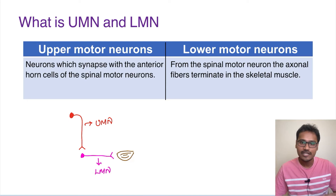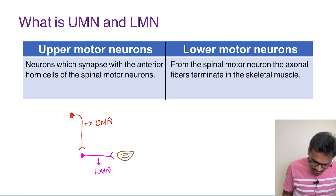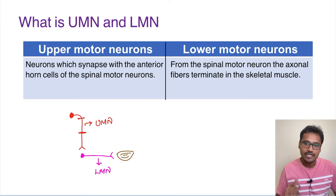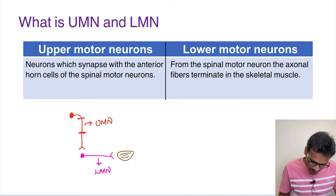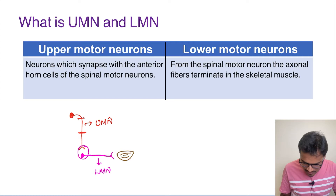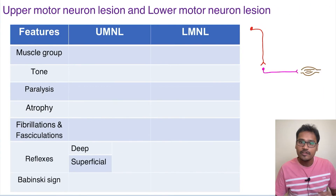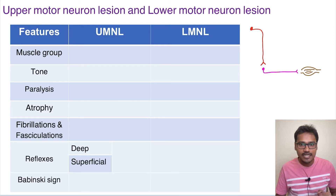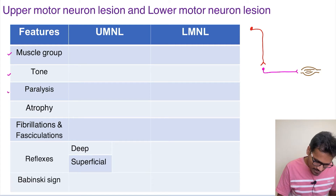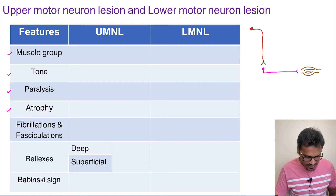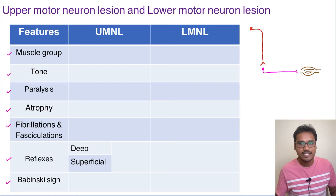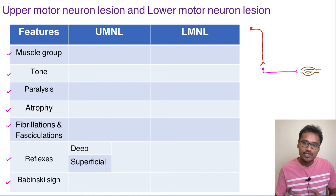Now let us try to understand what will happen whenever there is a lesion in the upper motor neuron and whenever there is a lesion in the lower motor neuron. In an upper motor neuron lesion, the cut can be at any level. In the lower motor neuron, whenever it starts from the synapse until it reaches the muscle, if the injury is anywhere in between this region, it is called as lower motor neuron lesion. We will be discussing the differences under these subheadings: muscle group, tone, paralysis, atrophy, fibrillations and fasciculations, reflexes, and finally the Babinski sign.